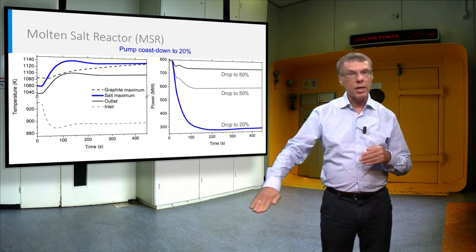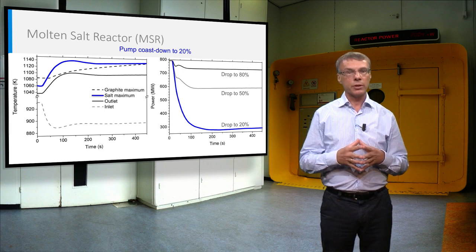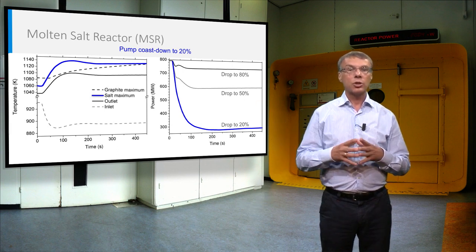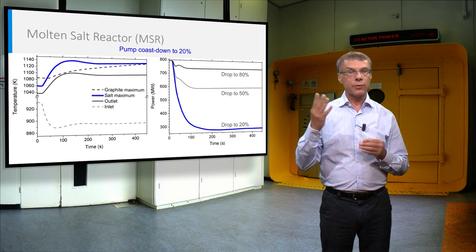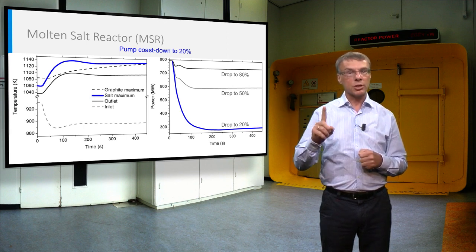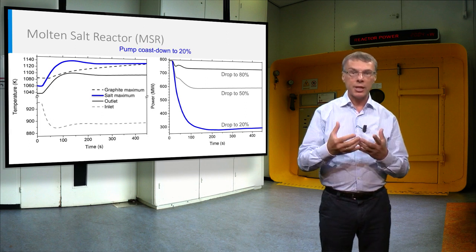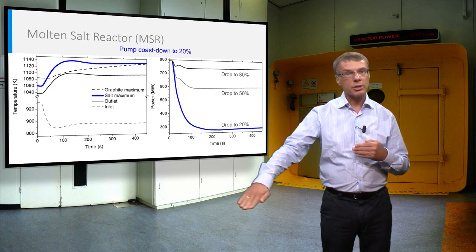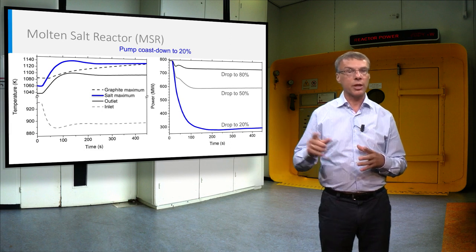Due to these mechanisms, the power drops sharply if one or more pumps would fail. The left figure shows the temperature of the salt if 4 out of 5 pumps would fail. The temperature rises only some few tenths of degrees, which directly leads to a sharp decrease of the reactor power, shown in the right figure.